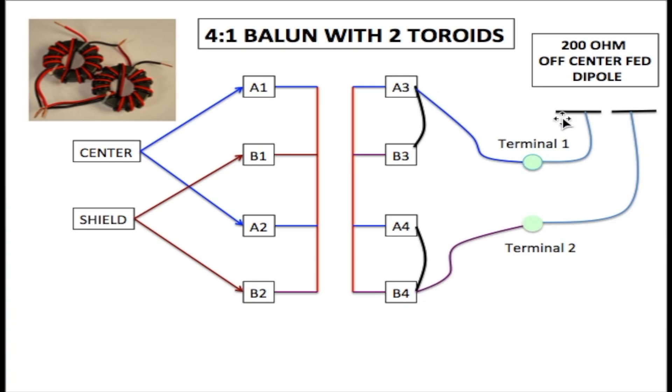So we connect one element of the dipole antenna to A3. Well, it could be B3 as well because they're tied together. And the other side of the element, we have connected the B4. It could also be A4 because they're tied together here as well. And that's basically it. This is how you design a 4:1 balun using two toroids.